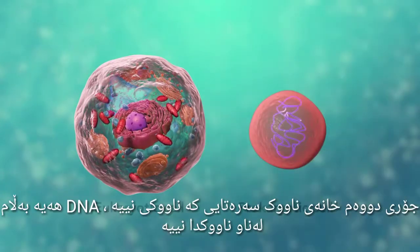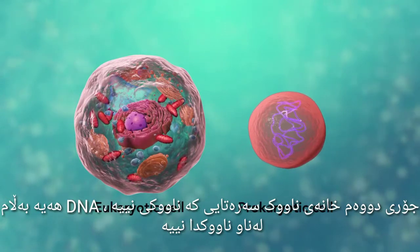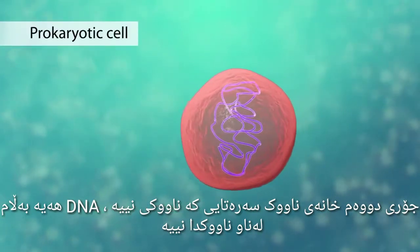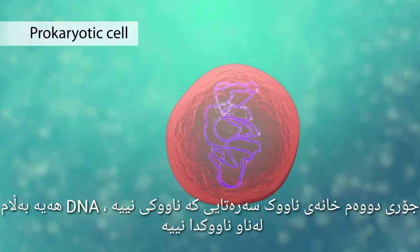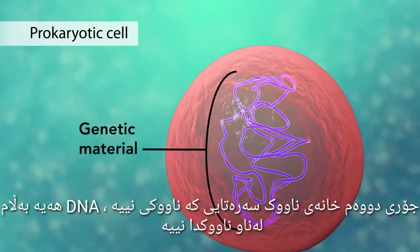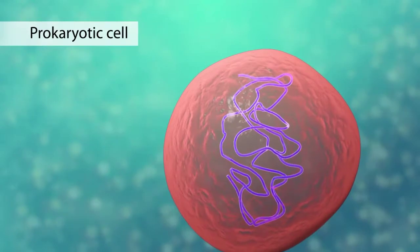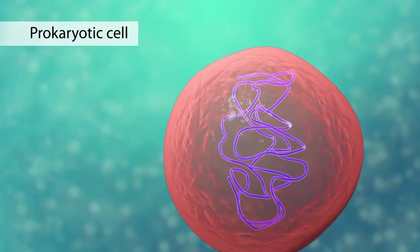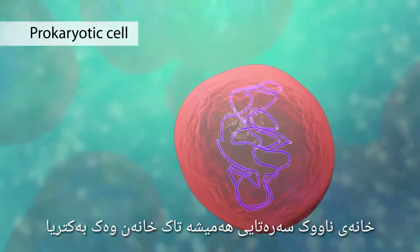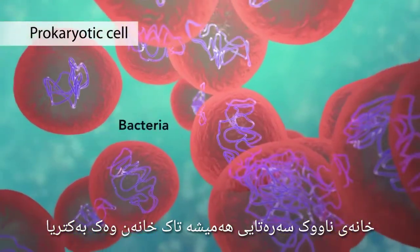The second category is prokaryotic cells. They don't have a nucleus or membrane-enclosed organelles. They do have genetic material, but it's not contained within a nucleus. Prokaryotic cells are always one-celled or unicellular organisms, such as bacteria.